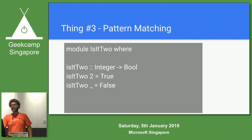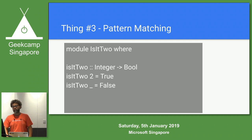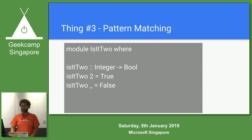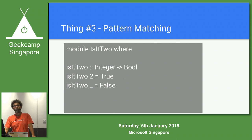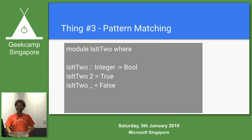Thing number three: pattern matching. Pattern matching is an extremely powerful thing in Haskell. If you haven't worked with a language that has pattern matching built in, it's a very powerful thing worth exploring. Try Scala — it's a little bit more of a gentle introduction. What's happening here is I'm declaring a function that takes an integer and returns a Boolean value. I've got two implementations of the same function, which should look weird to you. This is similar to overloading, but it's resolved through pattern matching by the Haskell compiler.